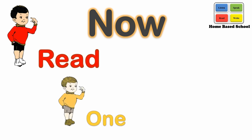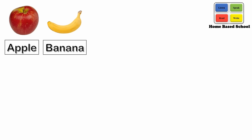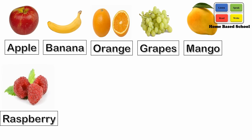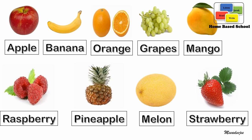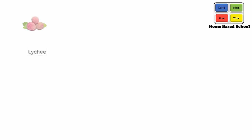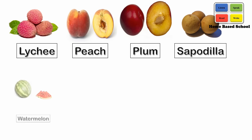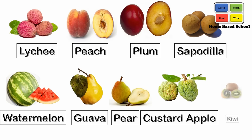Now read one by one. Apple, banana, orange, grapes, mango, raspberry, pineapple, melon, strawberry, lychee, peach, plum, sapodilla, watermelon, guava, pear, custard apple and kiwi.